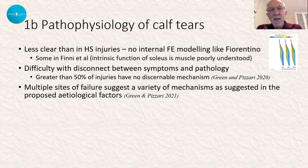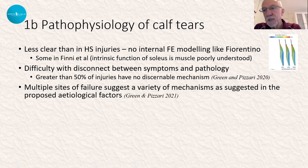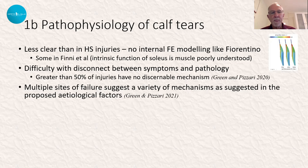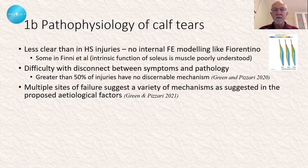There's a lot we don't understand with respect to what happens intrinsically within the calf. We've got this great finite element modelling of the hamstring complex, but we don't really have quite the same within the calf — though I will show you some of what's out there. We do have a significant disconnect between symptoms and pathology, and around 50% of injuries have no discernible mechanism. But is this due to the lack of sensory innervation in the deeper calf as well?